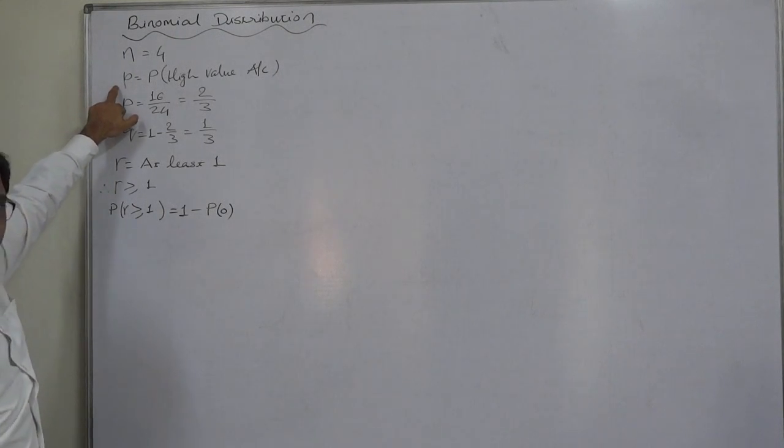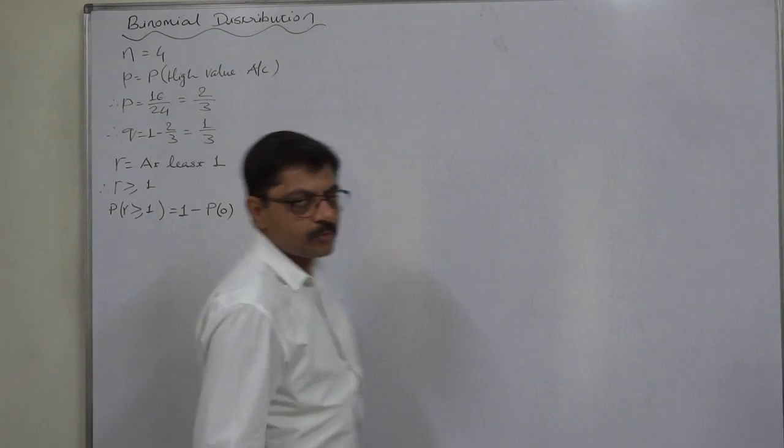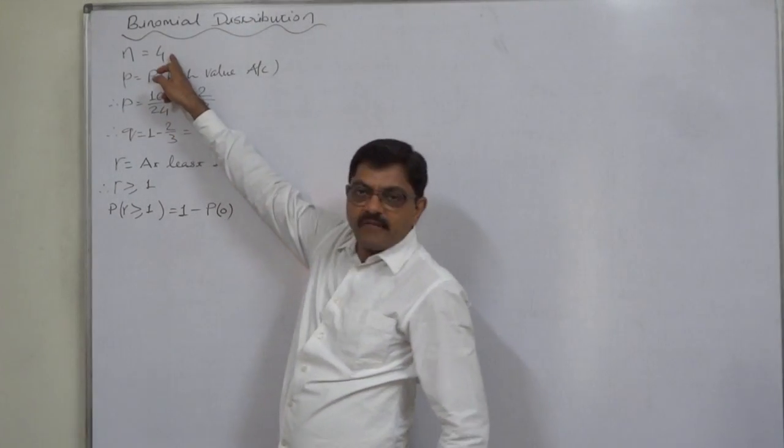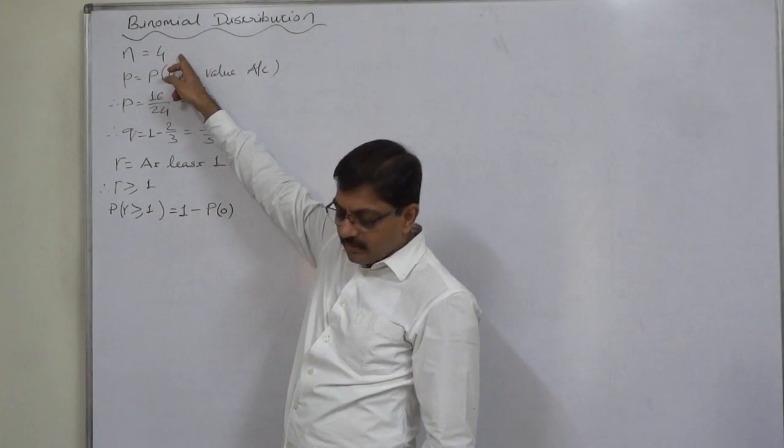Small p for binomial. Now why should we solve this problem through binomial? Because n is 4, n is finite and fixed countable.